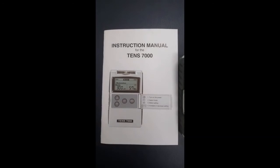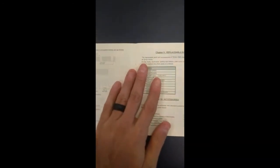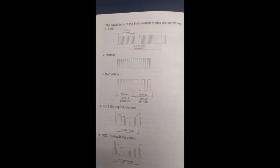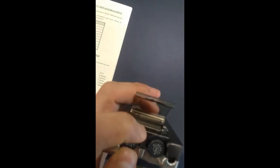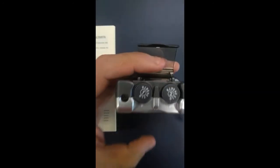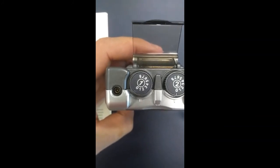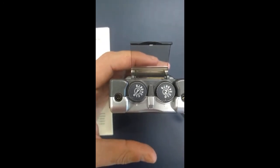Here's a quick video on how to use the portable TENS unit — in this case the TENS 7000. Each different portable unit will have different parameters. This one has five different modes: burst mode, normal mode, modulated mode, SD1, and SD2. To turn the machine on, flip it open and rotate the dial slightly. The dial goes zero through eight; each number represents 10 milliamps, so a setting of eight equals 80 milliamps.